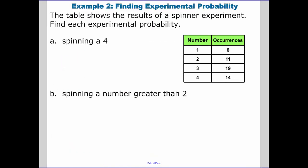So finding experimental probability. What's our total number of times that this thing happened? When I add all these numbers together, I get 50. So our total number of times the experiment happened was 50. Spinning a four. Well, that's 14, because there were 14 times that we landed on four. So that's going to be seven over 25.